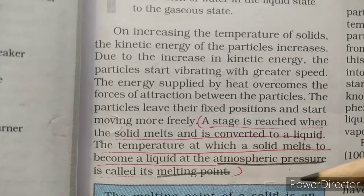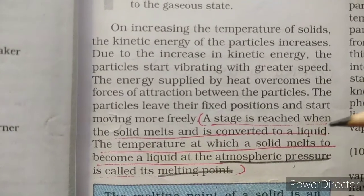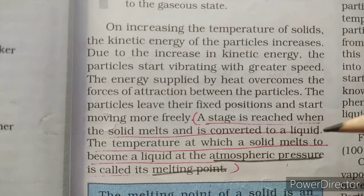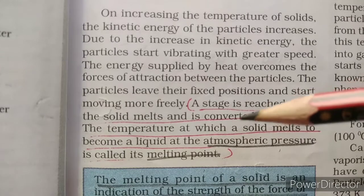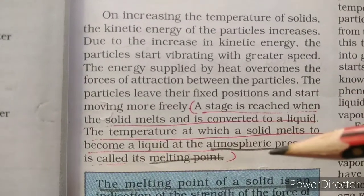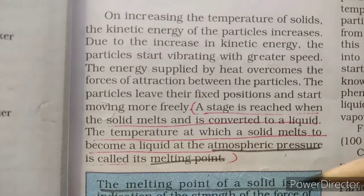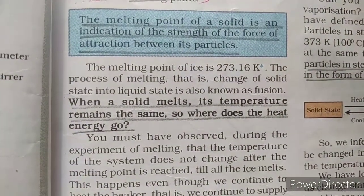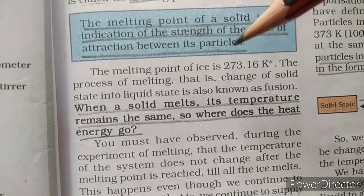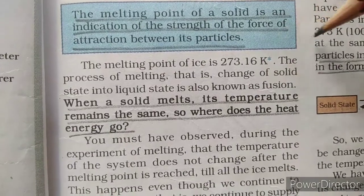The temperature at which a solid melts to become a liquid at atmospheric pressure is called the melting point. For example, ice converts into water. The melting point of a solid is an indication of the strength of the force of attraction between its particles. The melting point of ice is 273.16 K (Kelvin).